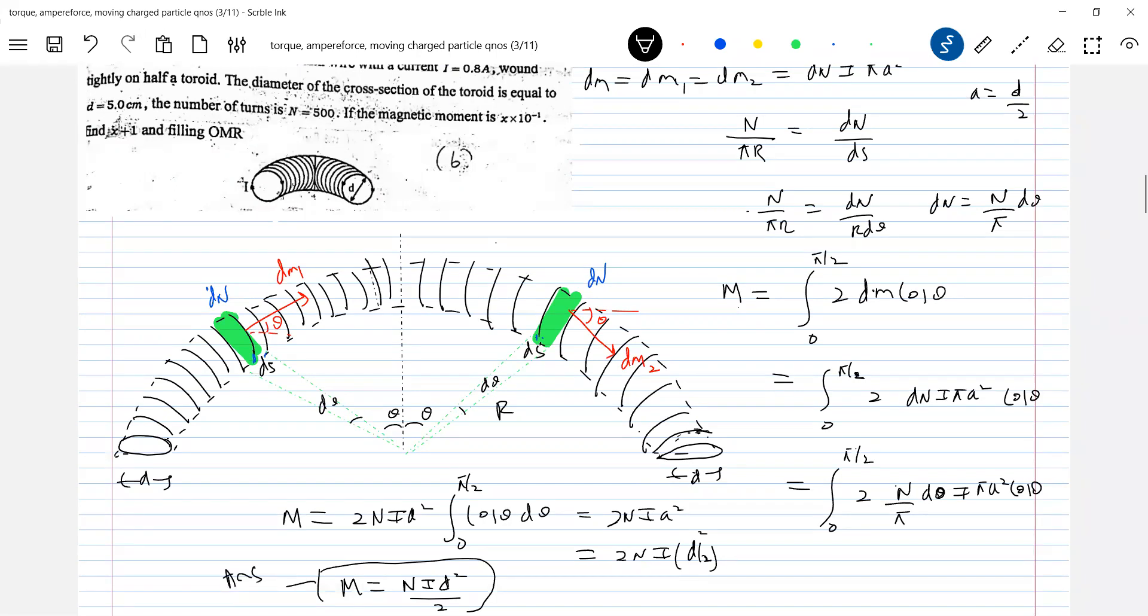So different shaped structures will come, not just only one current carrying loop. Different shaped structures will come and you are going to use this particular method.